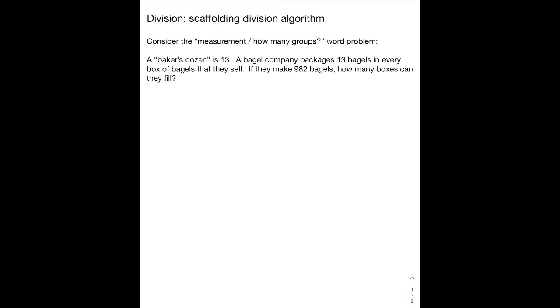This is a measurement how many groups word problem. A baker's dozen is 13. A bagel company packages 13 bagels in every box of bagels that they sell. If they make 982 bagels, how many boxes can they fill?